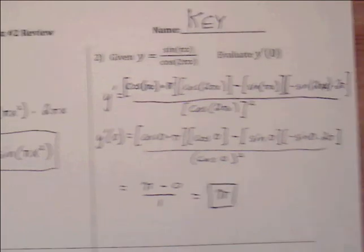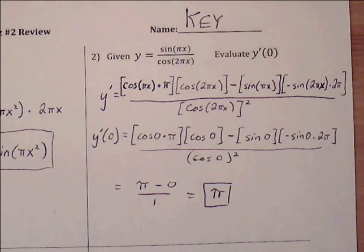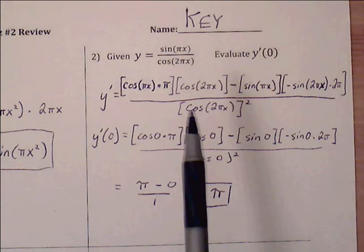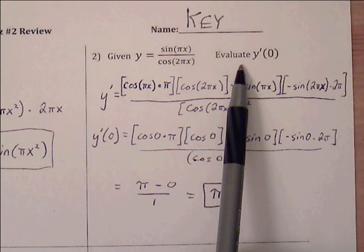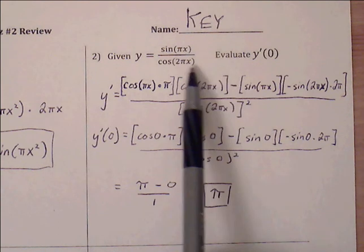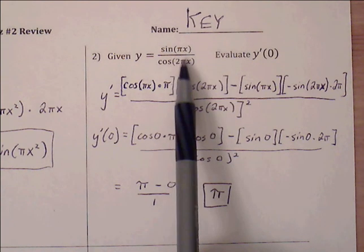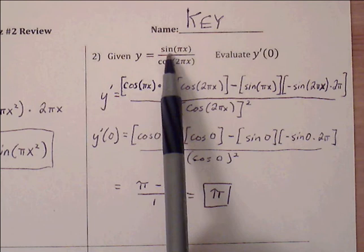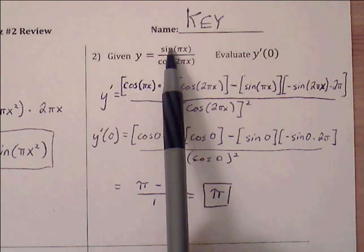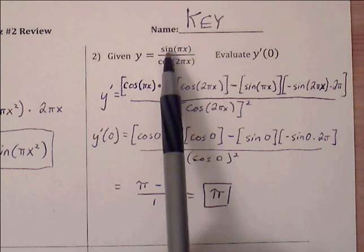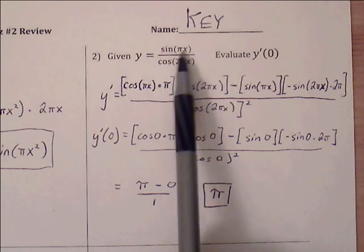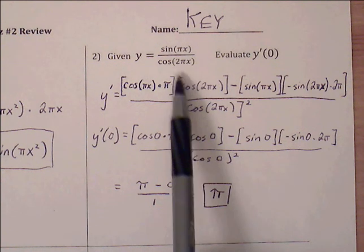Number two: given y equals sine(pi x) over cosine(2 pi x), evaluate y prime of zero. Here we have to use the quotient rule because we have a numerator and denominator with separate functions we can't combine. Within each of those functions, we also have to apply the chain rule when we get to them.